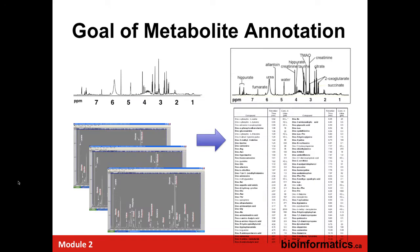You've seen this slide before — this is the concept of metabolite annotation. It's a bunch of spectra or a single spectrum, and what you're trying to do is put compound names to every peak, and get intensities or concentrations. A list of concentrations is ultimately what we'd like. It can be done either through targeted or untargeted metabolomics — that's the final objective.